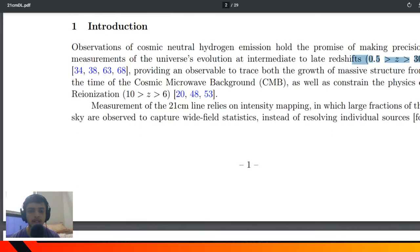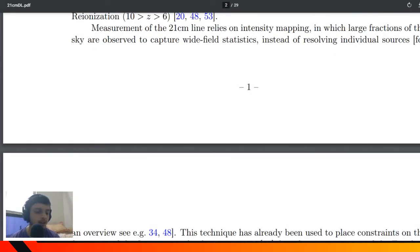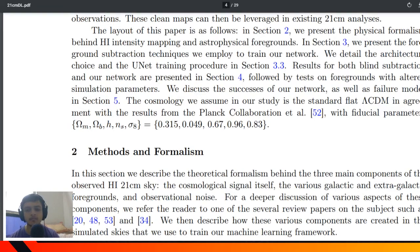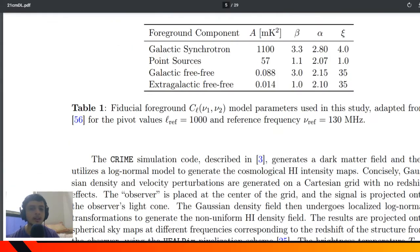There are various foreground removal techniques people have been doing previously, like blind foreground subtraction and PCA residual analysis. Now they're using neural networks as a statistical tool to get better image representation of the data. They have named this neural network model as Deep21.